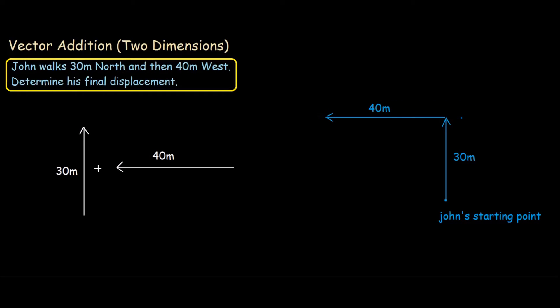So this point over here is where John should have ended up. This is actually John's final location. To find the displacement, we go from the starting position to the final position, and the length of this vector, the white one, is our solution.